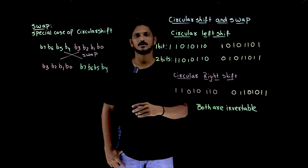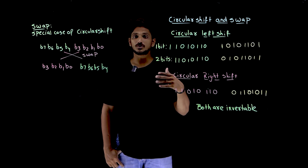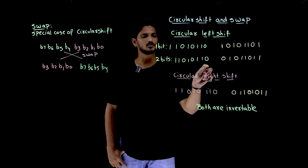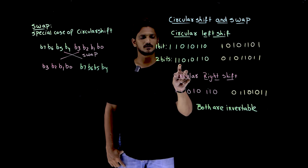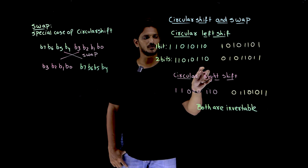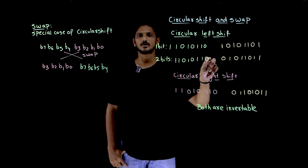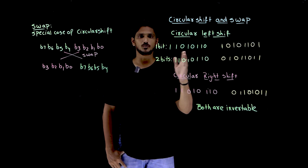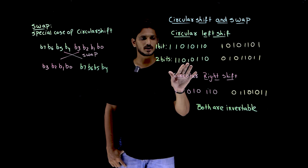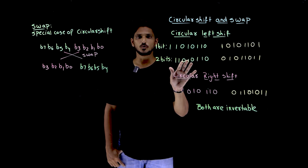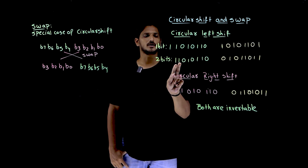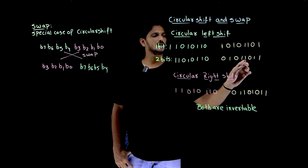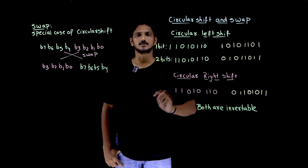Circular left shift means if you want to shift 2 bits, the last bit is moved to the first position, then the one before it also moves to the first position. This is how left shift moves. So if you move 2 bits, the last 2 bits go to the front and the remaining bits stay as they are.